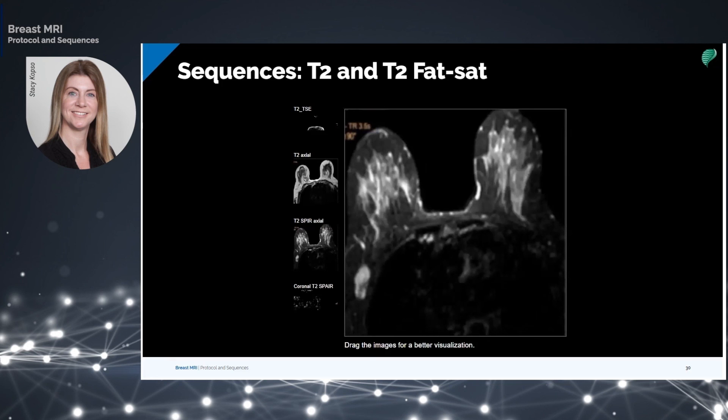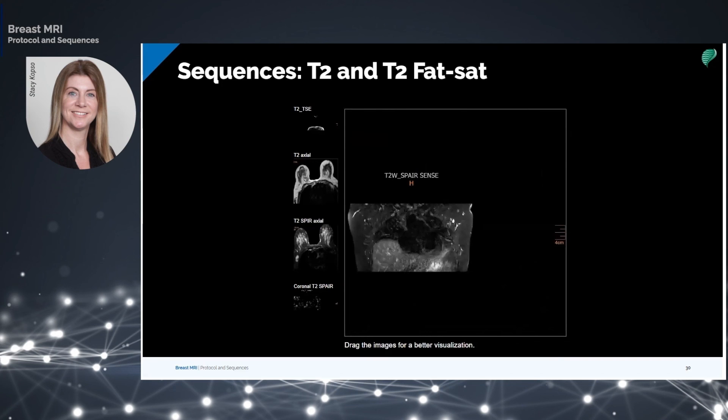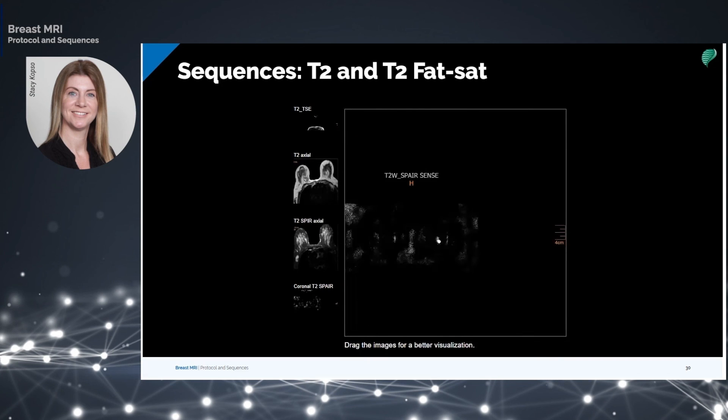T2 and T2 fat suppression are also done in coronal slices. Coronal imaging has its advantage in reduced heart pulsation artifacts and enables bilateral imaging of the breast. As mentioned in Module 1, coronal images best demonstrate the circular body of the breast and the axillary tail.